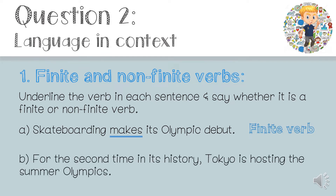Number B: 'For the second time in its history, Tokyo is hosting the Summer Olympics.' The verb in this sentence is 'hosting'. You will see that there is an auxiliary verb in front of 'hosting' — the word 'is'. The auxiliary verb 'is' is the one that changes when we change the number of people or things, or when we change the tense. 'Hosting' stays the same, and that is the rule for non-finite verbs.